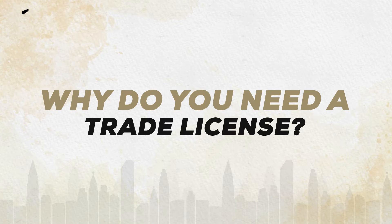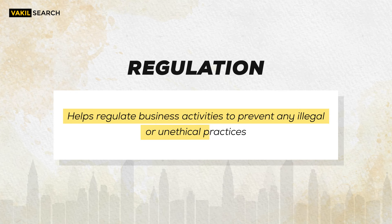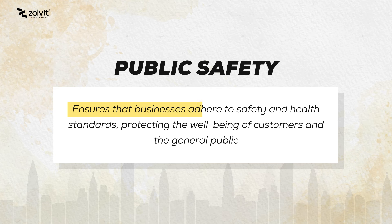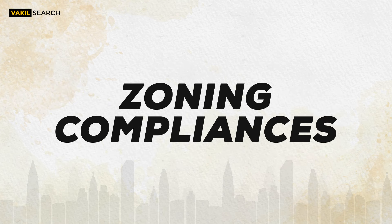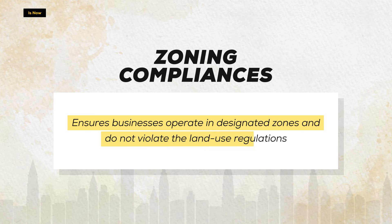Why do you need a trade license? It serves several purposes. Regulation helps regulate business activities to prevent any illegal or unethical practices. Public safety ensures that businesses adhere to safety and health standards, protecting the well-being of customers and the general public. Zoning compliance ensures businesses operate in designated zones and do not violate land use regulations.